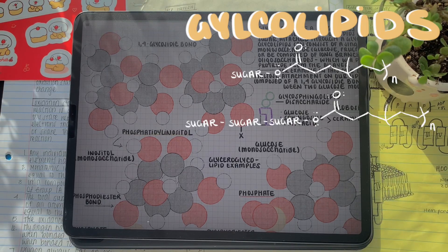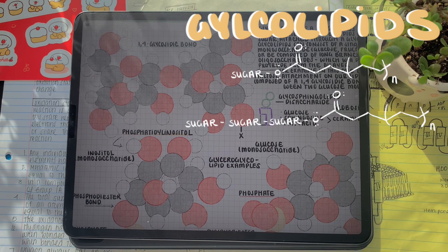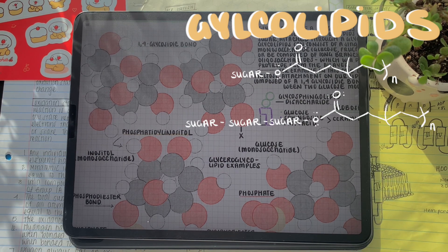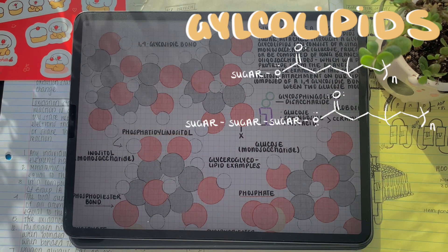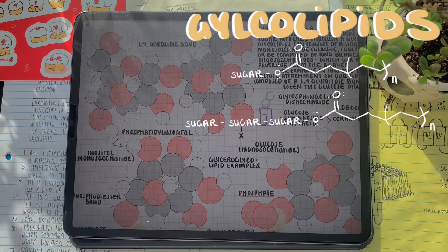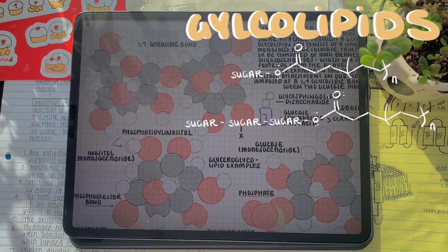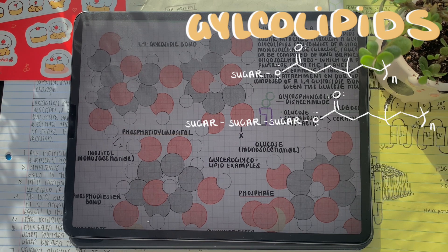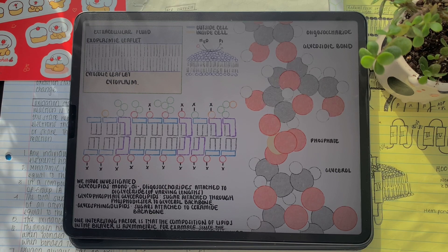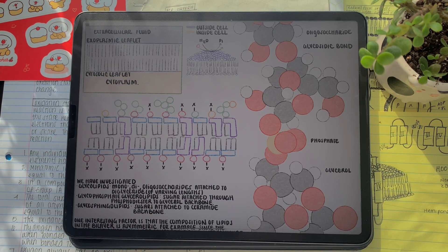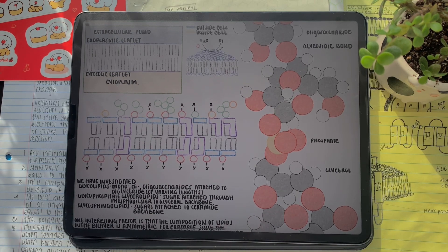This is where we start to see a trend that we're going to see played out multiple times through studying glycolipids. We can examine the structure of a specific lipid with a single sugar attached. But these sugar chains can vary by length, spanning from disaccharides, trisaccharides, and even long sugar chains, branching off of the fatty acid or molecular backbone that they're attached to.